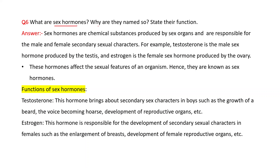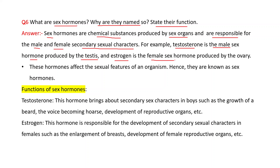Question 6: What are sex hormones? Why are they named so? State their function. Answer: Sex hormones are chemical substances produced by sex organs and are responsible for the male and female secondary sexual characters. For example, testosterone is the male sex hormone produced by the testes and estrogen is the female sex hormone produced by the ovary. These hormones affect the sexual features of an organism, hence they are known as sex hormones.